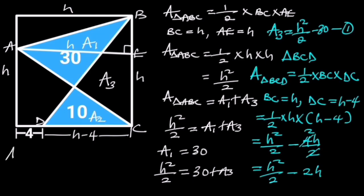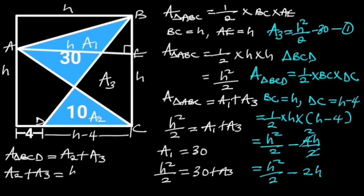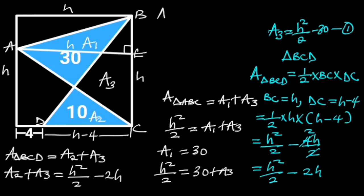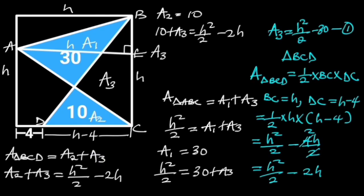Also, let's observe that the area of triangle BCD is equal to A2 plus A3. So we can say that A2 plus A3 is equal to H squared over 2 minus 2H. Since A2 is equal to 10 square units, it follows that 10 plus A3 is equal to H squared over 2 minus 2H. Making A3 the subject, we have A3 = H squared over 2 minus 2H minus 10. Let this be equation 2.